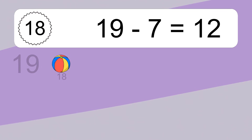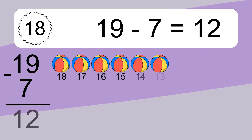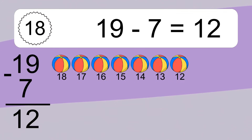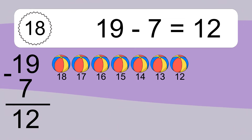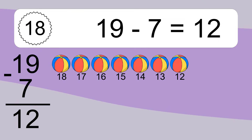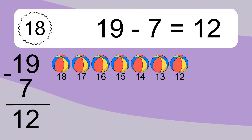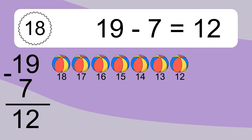19 minus 7 equals 12. Let's count it: 18, 17, 16, 15, 14, 13, 12.